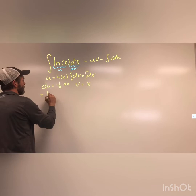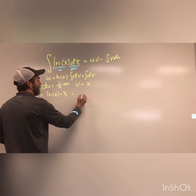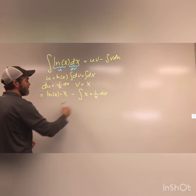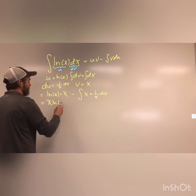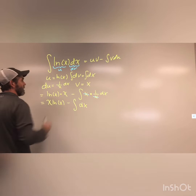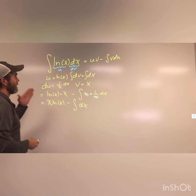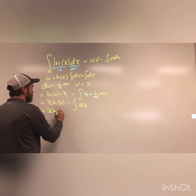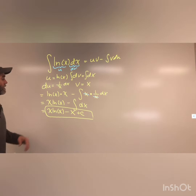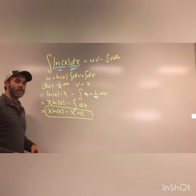We follow the formula: u times v minus the anti-derivative of v du. So that gives us the natural log of x times x, minus the anti-derivative of x times 1 over x dx. We can clean this up — the x's cancel. So we're just asking, what's the anti-derivative of dx? We already know that's x. And we're done. The anti-derivative of the natural log of x is x natural log of x minus x plus C.